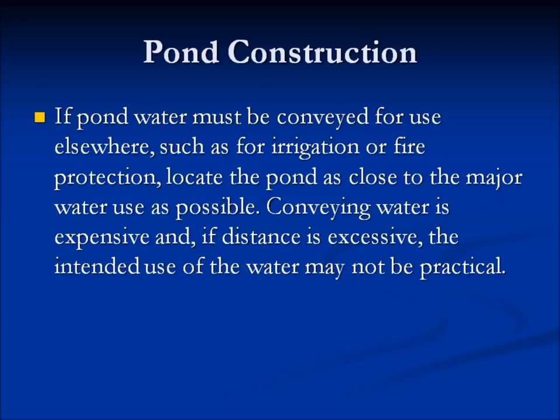If the pond water is going to be utilized for irrigation or maybe fire protection, locate the pond as close to the major water source as possible. Pumping water over a great distance is expensive. For example, if we have a fruit orchard or a pecan orchard that we're going to irrigate from the pond, we need to try to locate that orchard as close to the pond as possible to avoid conveying water a great distance and alleviate excessive cost.